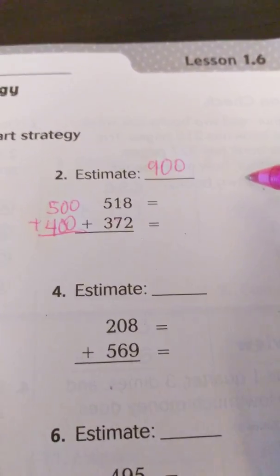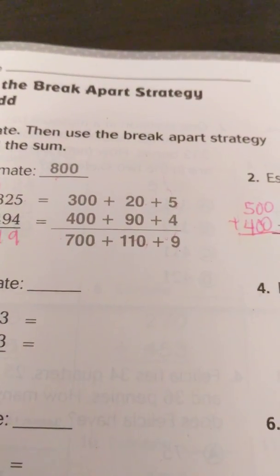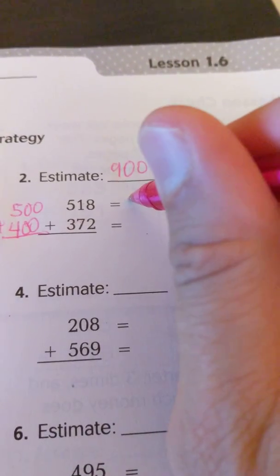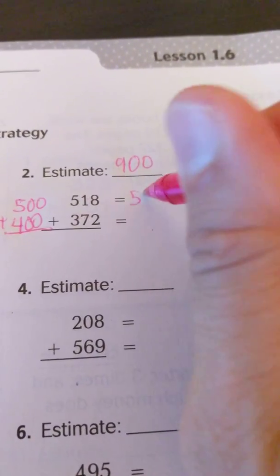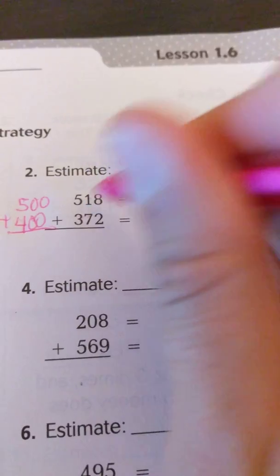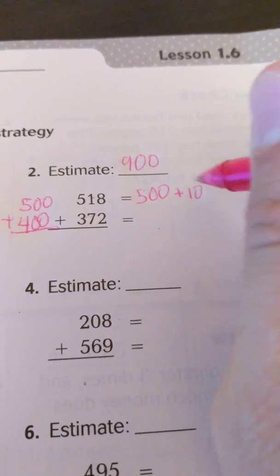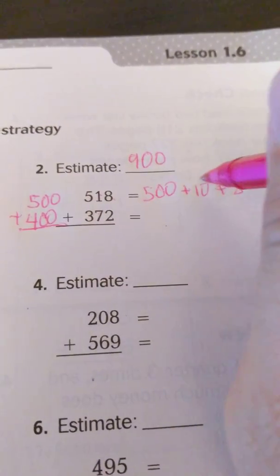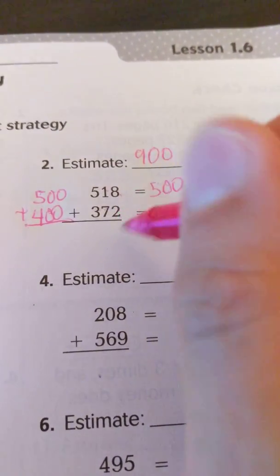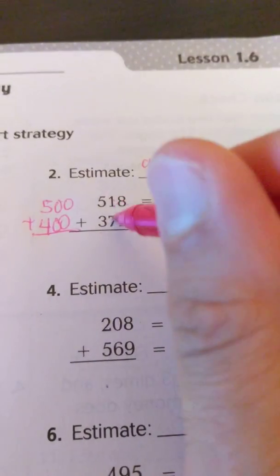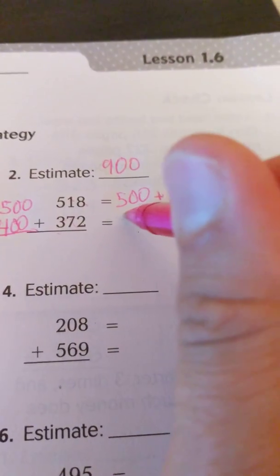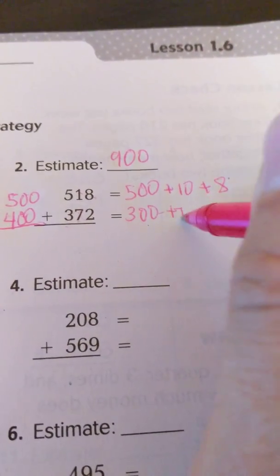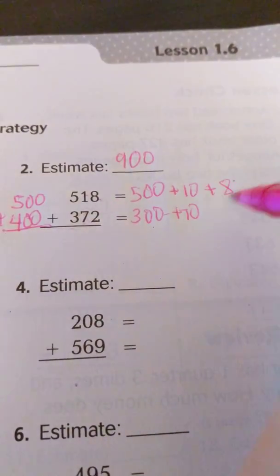So now I'm going to go ahead and do the expanded form like we did over here. So again, hundreds, tens, ones. Hundreds, tens, ones. So we're going to do 500 plus 10. There's 1 ten. And 8 ones. 500 plus 10 plus 8 is 518. Now we're going to break apart the hundreds, tens, and ones for 372. So 3 hundreds plus 7 tens, or 70, and 2 ones.